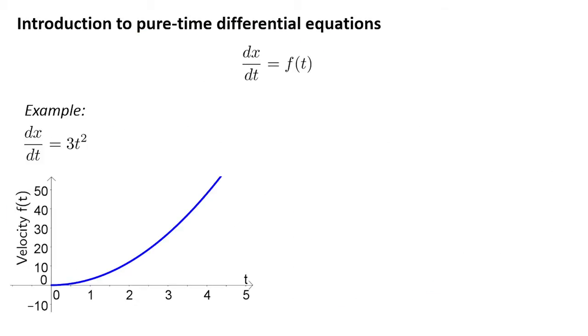An example of a pure-time differential equation is dx/dt equals 3t². If x(t) is position, then the differential equation states that the velocity increases faster and faster as time increases, as illustrated by this graph of the velocity.